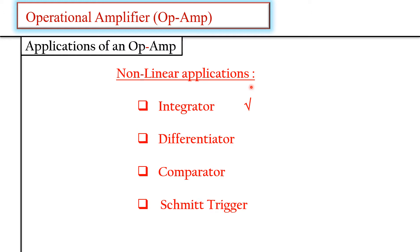We will see how to use the op-amp as an integrator. In the earlier videos, we used the op-amp as a summing amplifier and as a subtractor, and so far we have used only resistors with the op-amp. Now, if we use a reactive element like a capacitor or inductor along with the op-amp, we can use it as an integrator or differentiator.